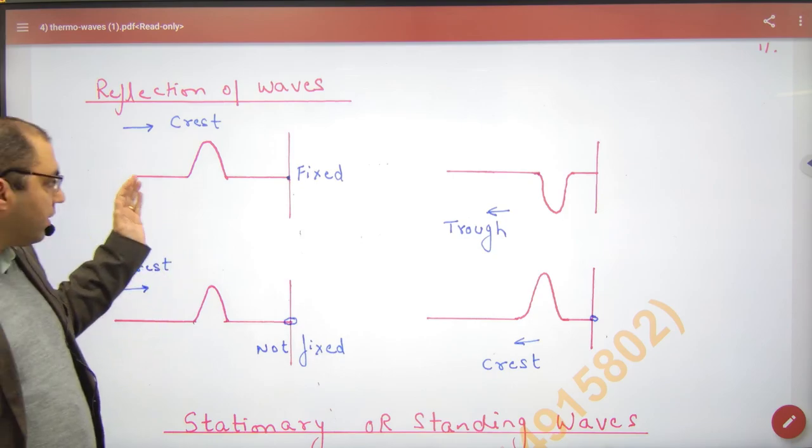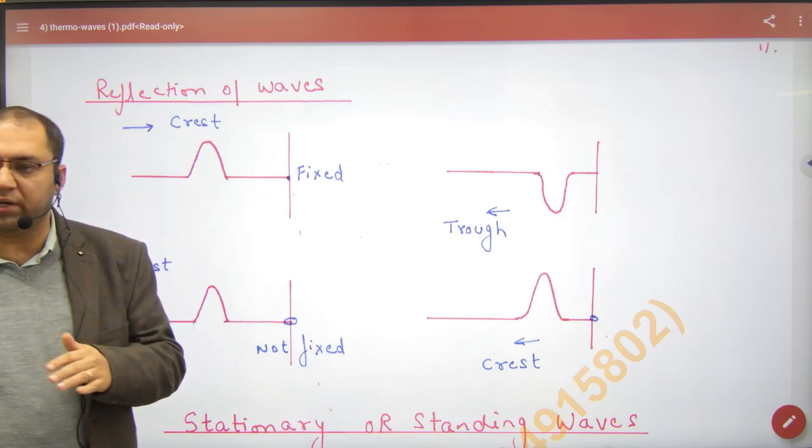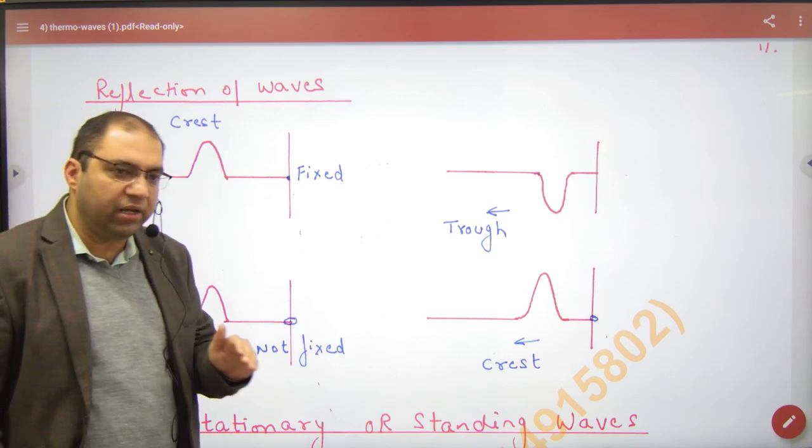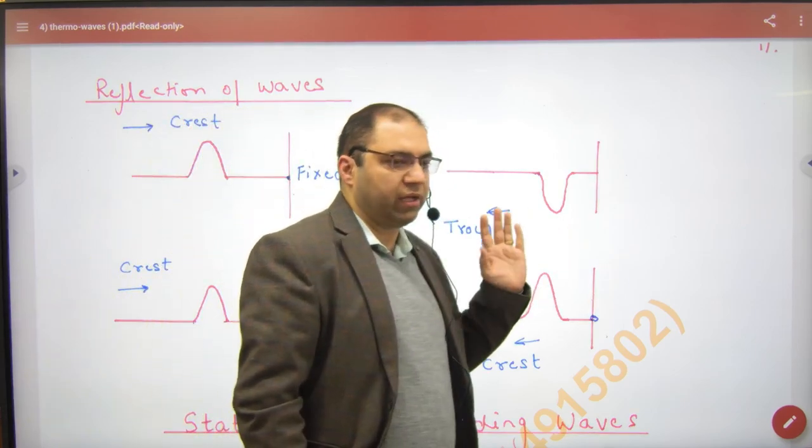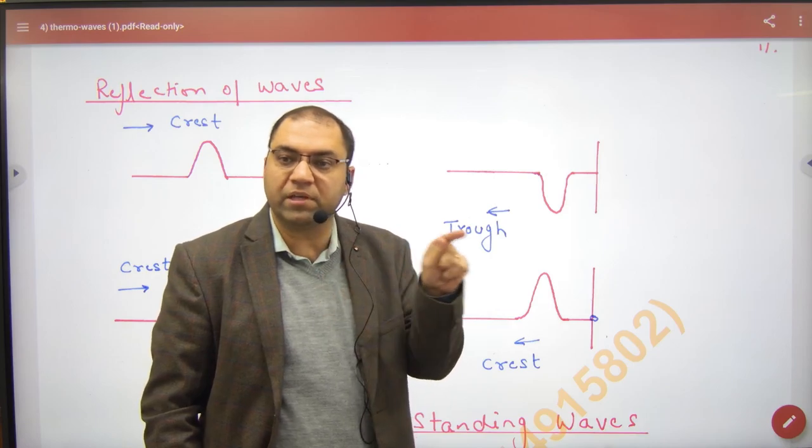So if a crest, then after reflection, if we don't have energy loss, then a trough will come back. So crest becomes trough when this end is fixed.